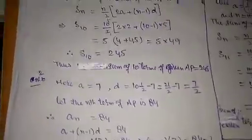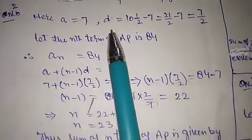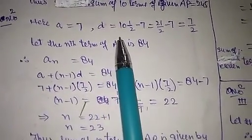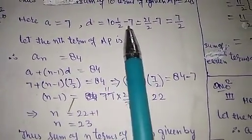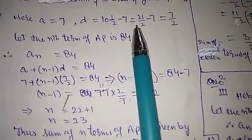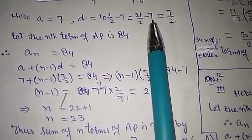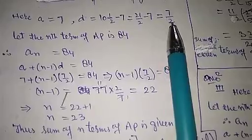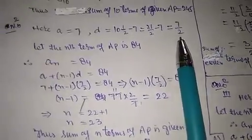We will solve this question. Here a is equal to 7. The common difference d is the second term minus the first term: 10.5 minus 7 equals 21 divided by 2 minus 7, which gives d equal to 7 by 2. So the common difference is 7/2.